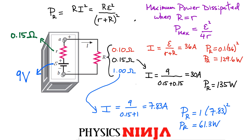So the maximum power of 135 W was obtained when the load resistance R equaled the internal resistance r — the impedance matching condition. When the impedance is matched between the source and the load, we get maximum power dissipated. That's it for me — leave a question if you don't understand anything. Thanks for watching.